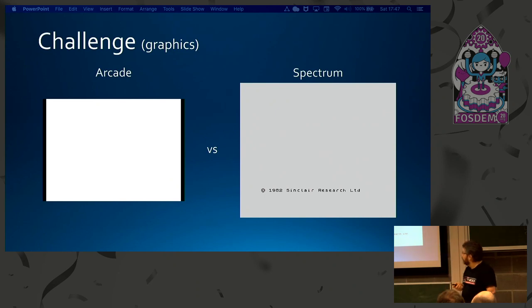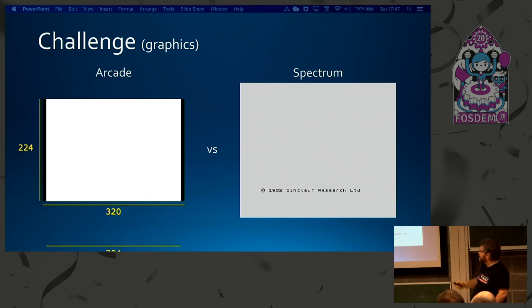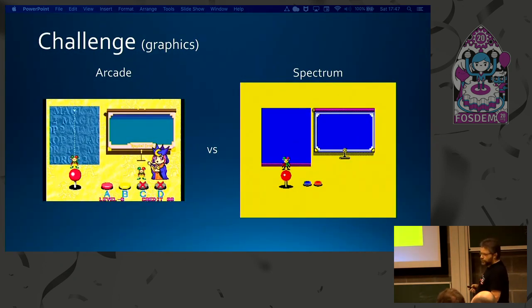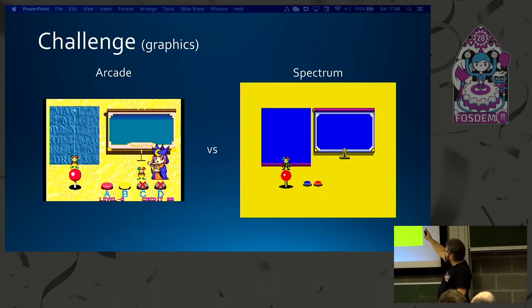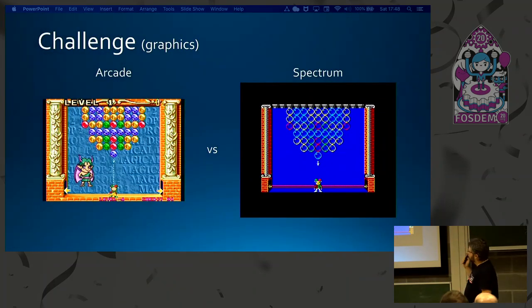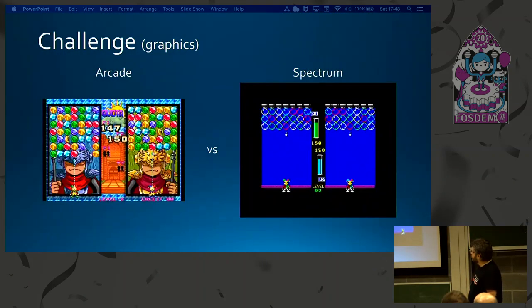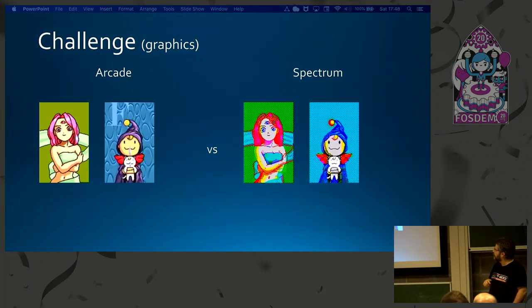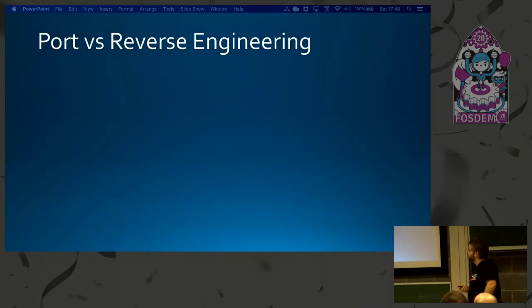The graphics challenge: the arcade has a much higher resolution. We only get 256×192 pixels — the rest is border. So we have to do some magic: we can glue our pixel area to the border and use the border as fake extra screen real estate, making it look bigger. These are experiments to see if we could do the main game graphics — and they look similar enough. This is the single-player layout, and this is the two-player layout. Some nice character graphics also needed to be converted.